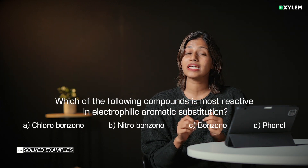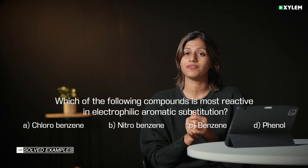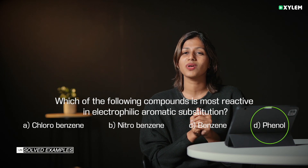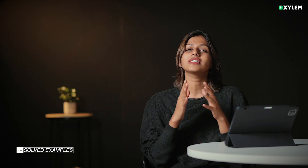Electron donating groups increase the reactivity. Hence, the answer will be option D — phenol. In electrophilic substitution, electron donating groups increase reactivity and give ortho and para products, while electron withdrawing groups decrease reactivity and give meta products.